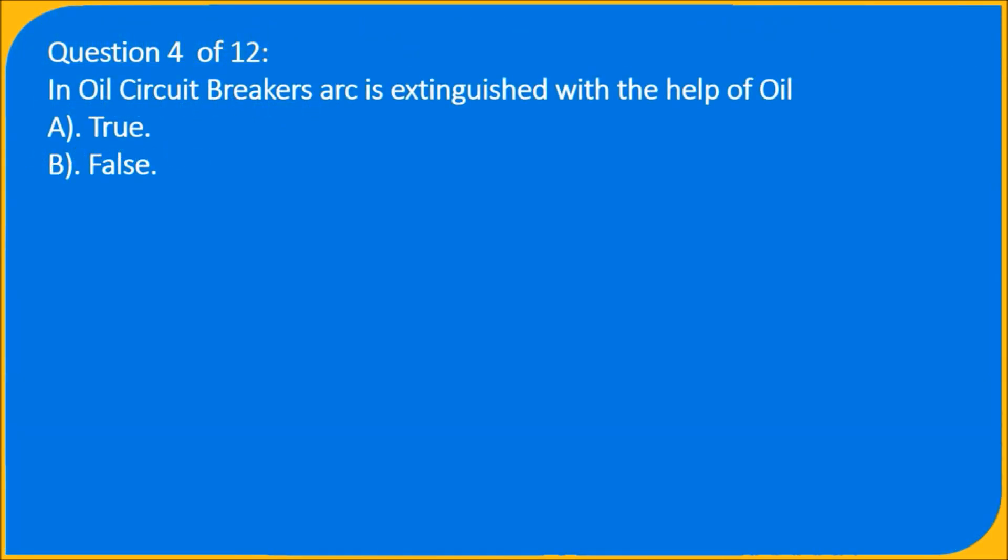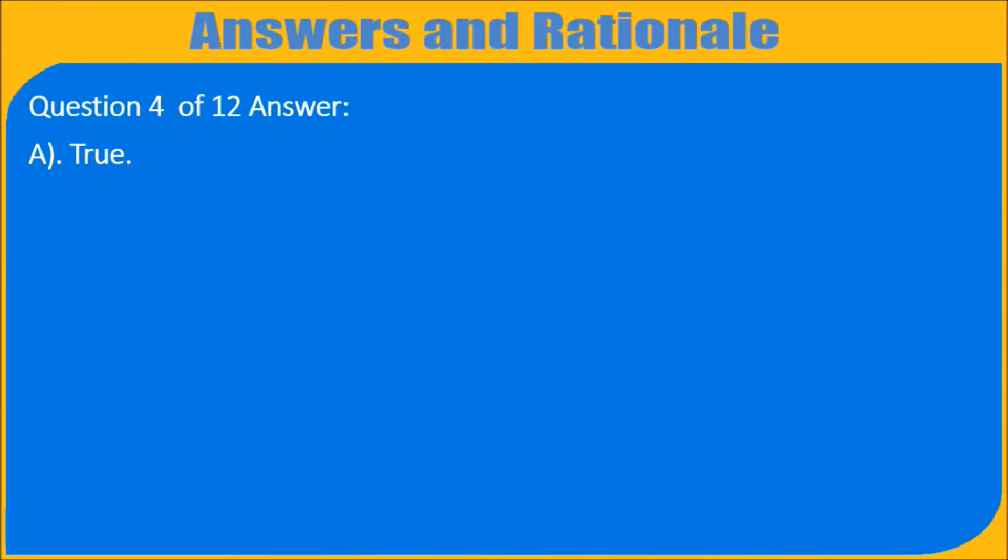Question 4 of 12: In oil circuit breakers, arc is extinguished with the help of oil. A) True, B) False. Question 4 of 12 answer: A) True.